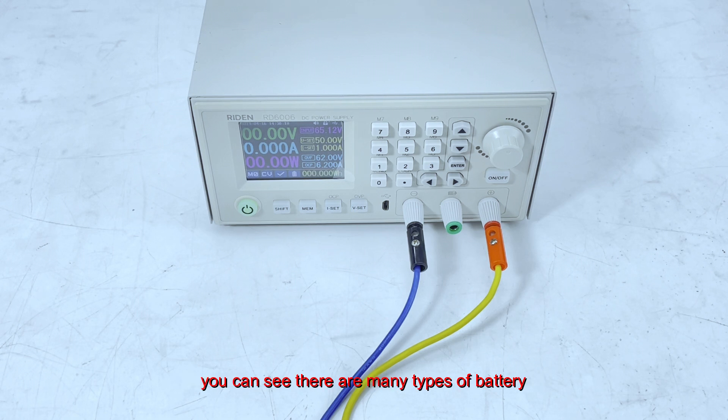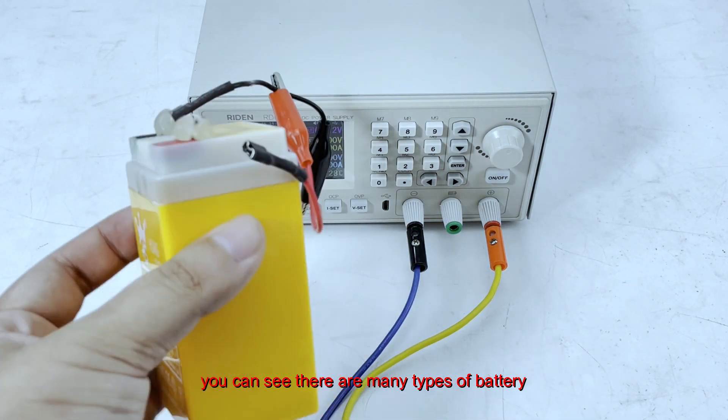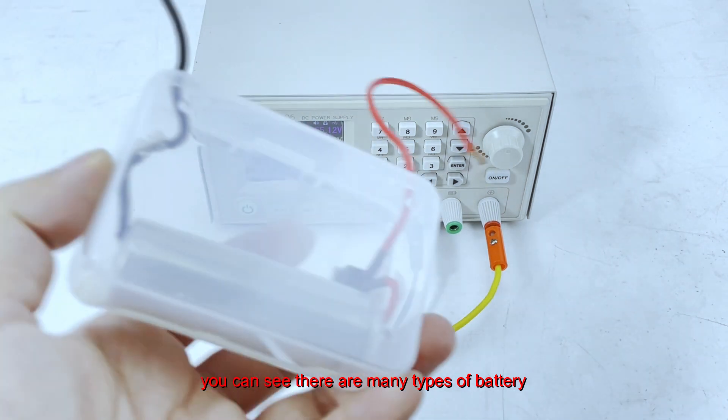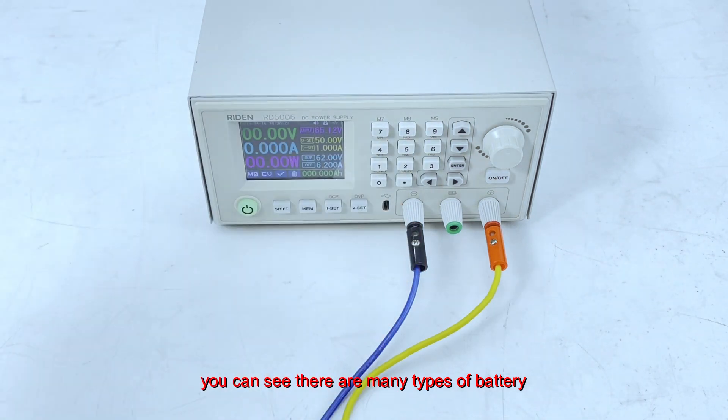You can see there are many different kinds of batteries. Like this kind of battery, and a lithium battery, and a very small battery.